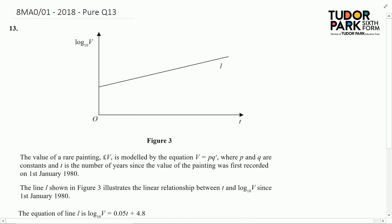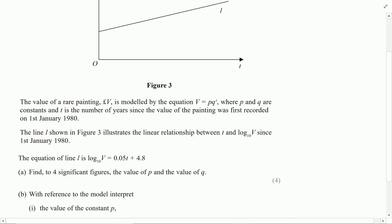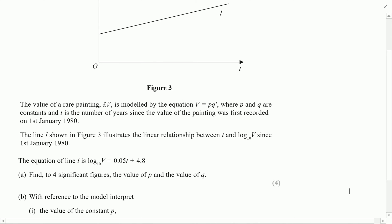The question asks us to establish the values of p and q. So what I'm going to do is take that initial equation, V equals pq to the power of t, and take logarithms of both sides. Now we understand that when we don't write a base, we do mean base 10.